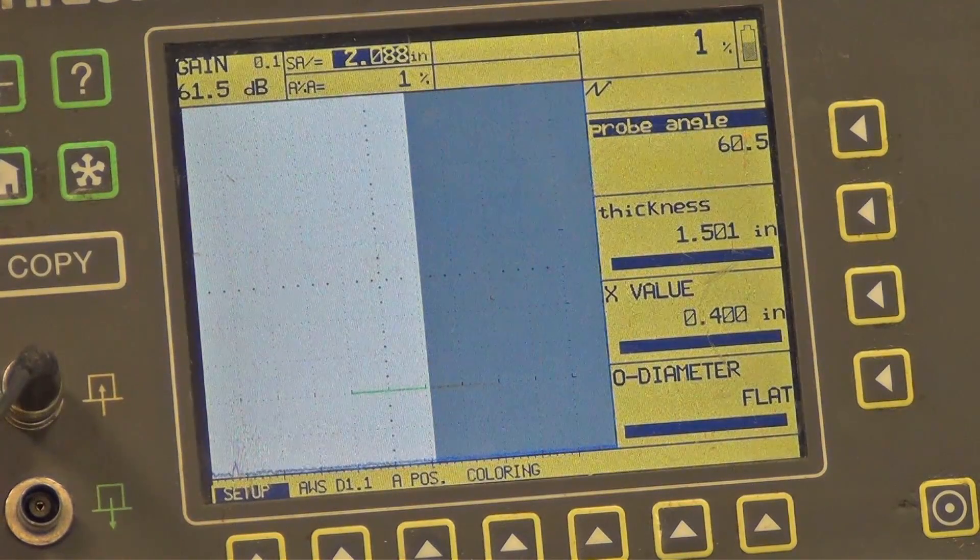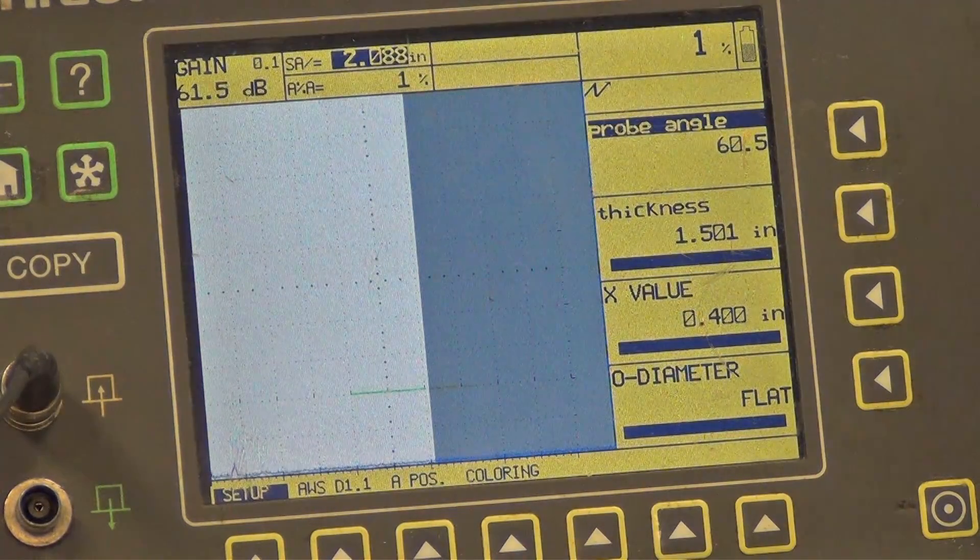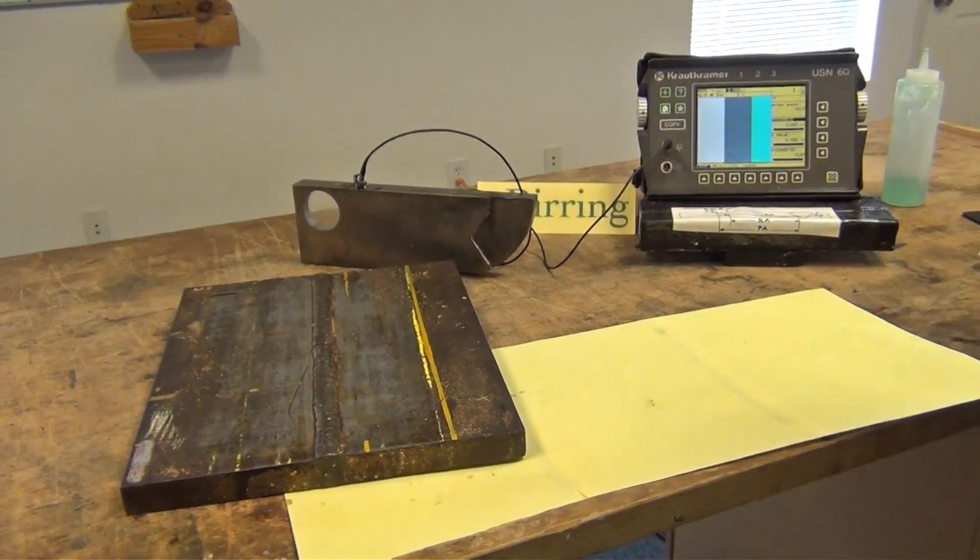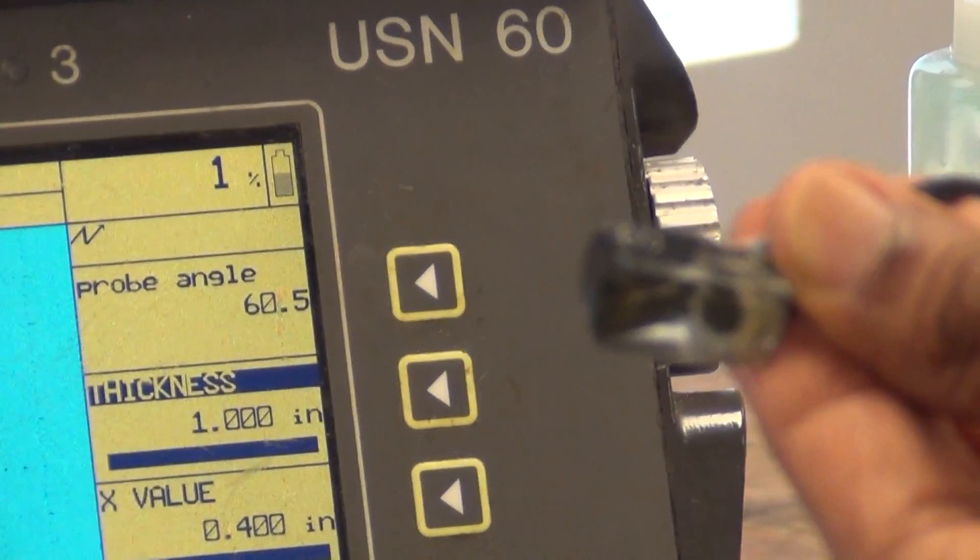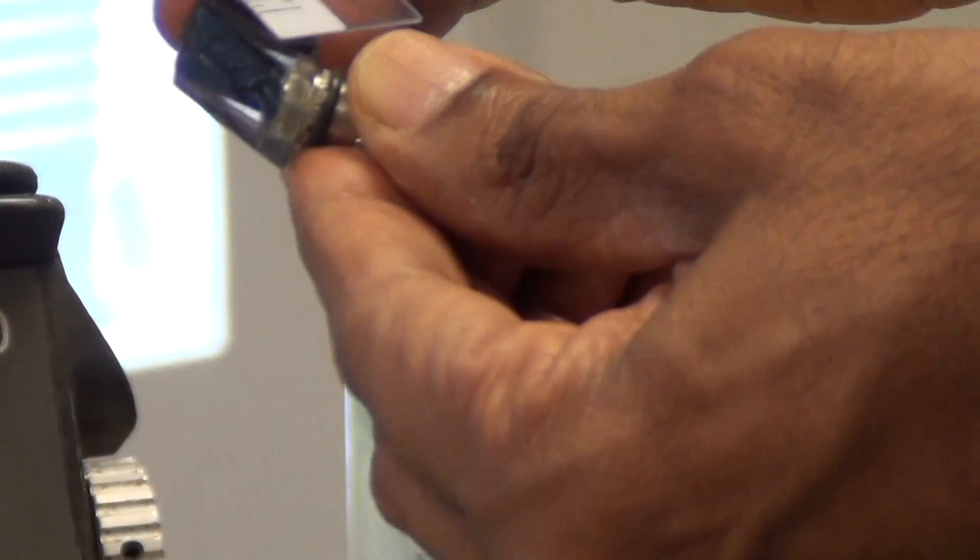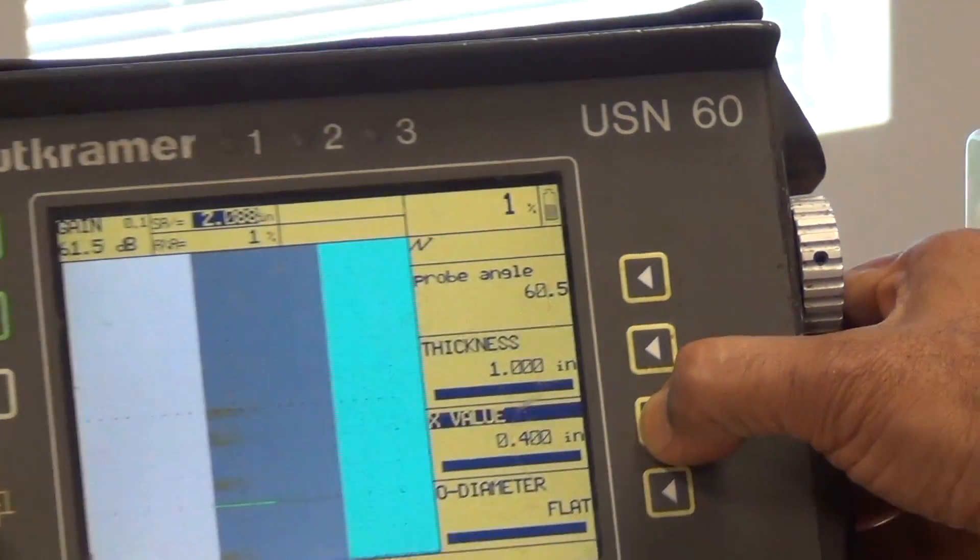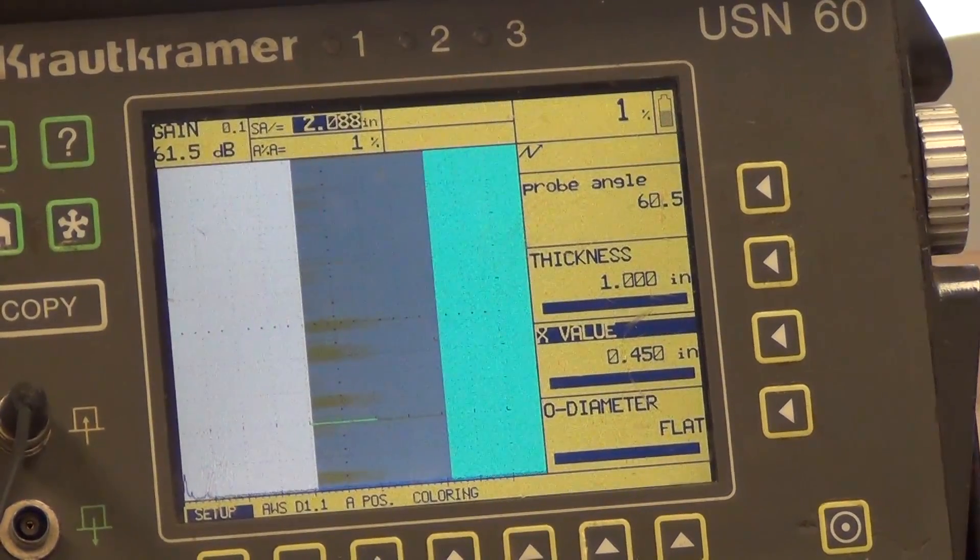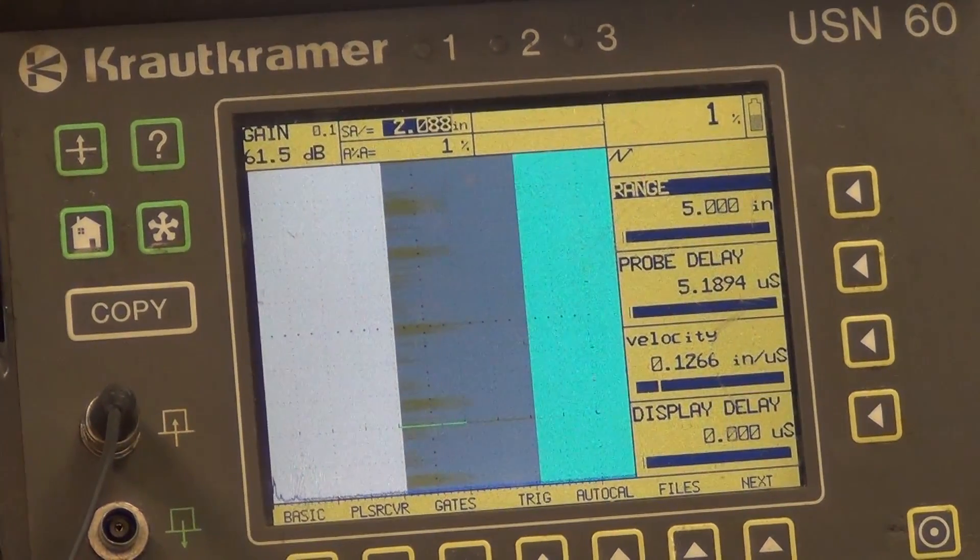So now let me set up the trig functions for the inspection. The actual refracted angle is 60.5 which we entered here. The thickness of the plate which is right here is 1 inch and the X value is the distance from the exit point of the wedge to the front of the wedge. And in this case that number is 0.45 inches. So I will enter 0.45 here. So that sets up the machine for the inspection of the 1 inch plate.